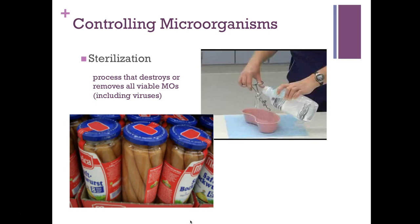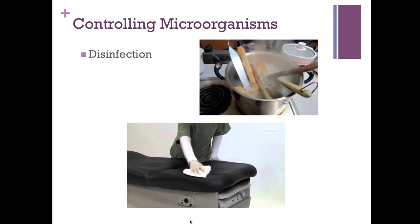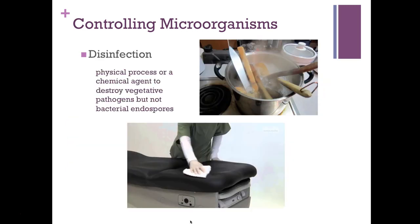Disinfection is a physical process or chemical agent used to destroy vegetative pathogens but not bacterial endospores. Specific bacteria can take their genetic information, create an endospore, and go into a dormant phase — not active or vegetative — and survive harsh environments until conditions become favorable again. Disinfection also helps remove toxins, and we use this term when discussing removing pathogens from inanimate objects like food utensils.